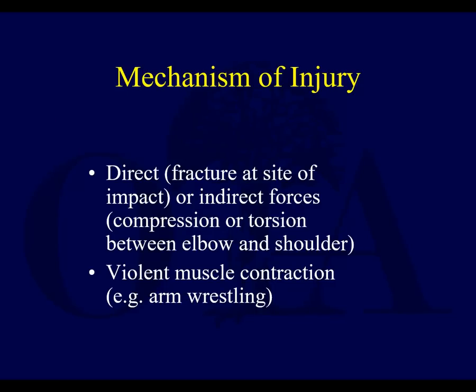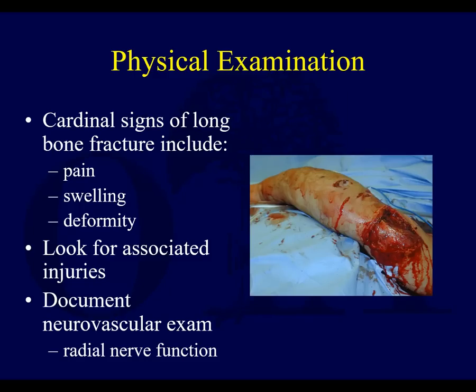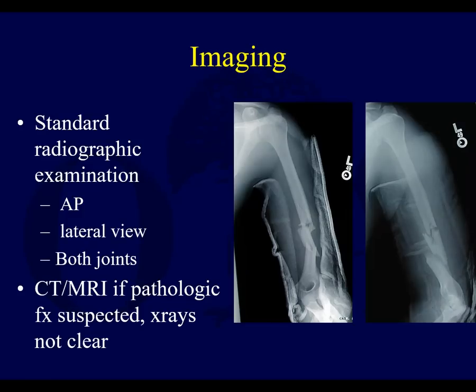Mechanism of injury is another way you can describe fractures — either direct or indirect forces by impact or possibly some type of rotational force. On physical examination, you want to look for pain, swelling, deformity, and associated injuries. It's really important to document the neurovascular exam, because many times patients are going to have an evolving exam — it may be different when they come in than it is later on, and you have different people examining the patient. Particularly, document radial nerve function, as the radial nerve is intimate to these fractures in many cases.